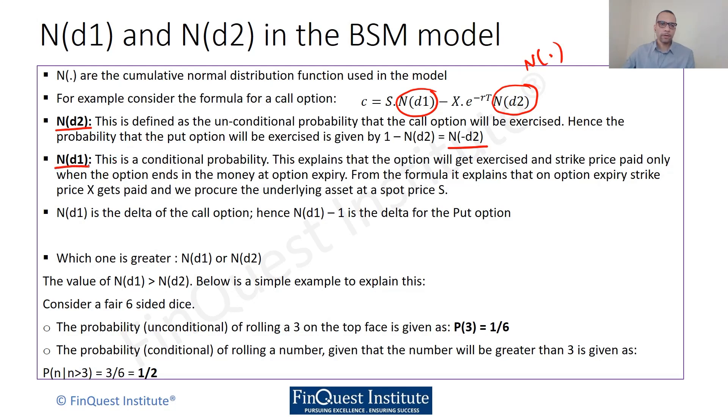N(d1) is a conditional probability measure. When we say a conditional probability measure, we are trying to focus or look at only those stock prices which are higher than our strike price. Why we say it's a conditional probability measure is because this basically tries to explain what is the probability that the option will be exercised, i.e., we know that the option will be exercised only when the stock price is higher than the strike price.